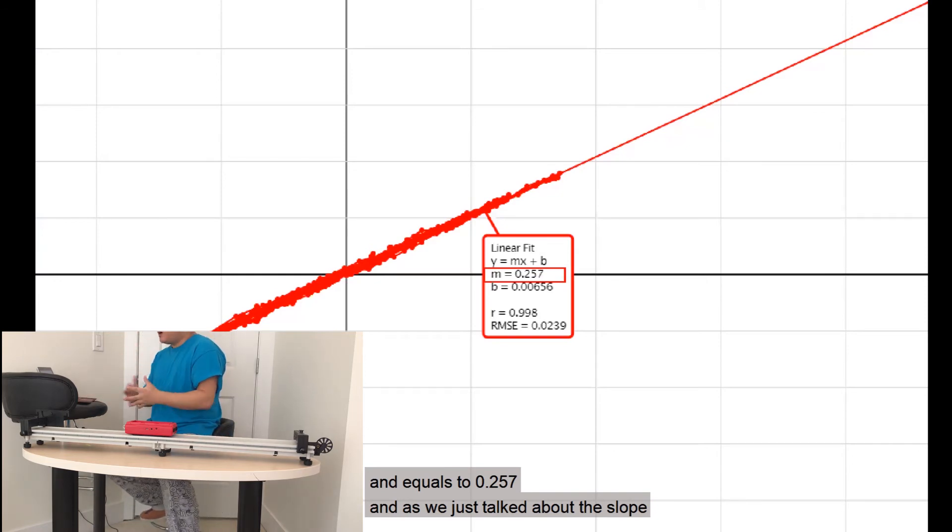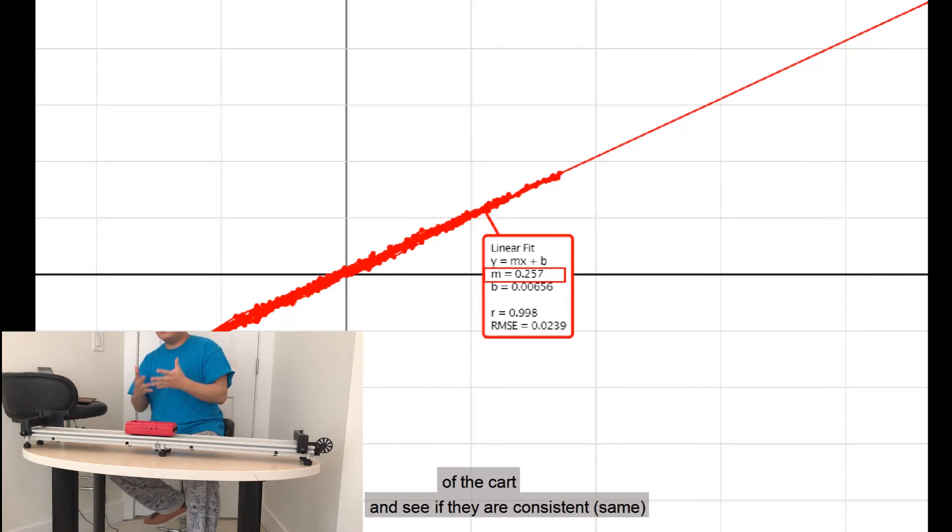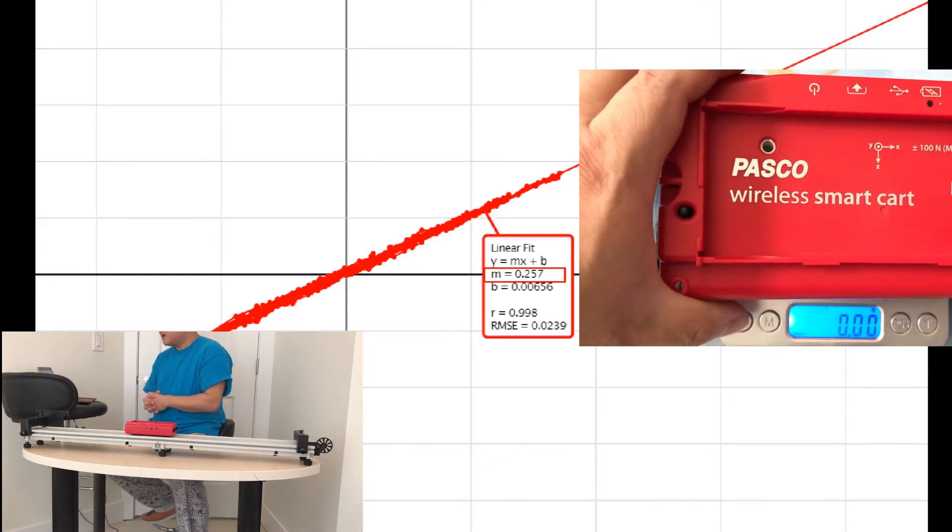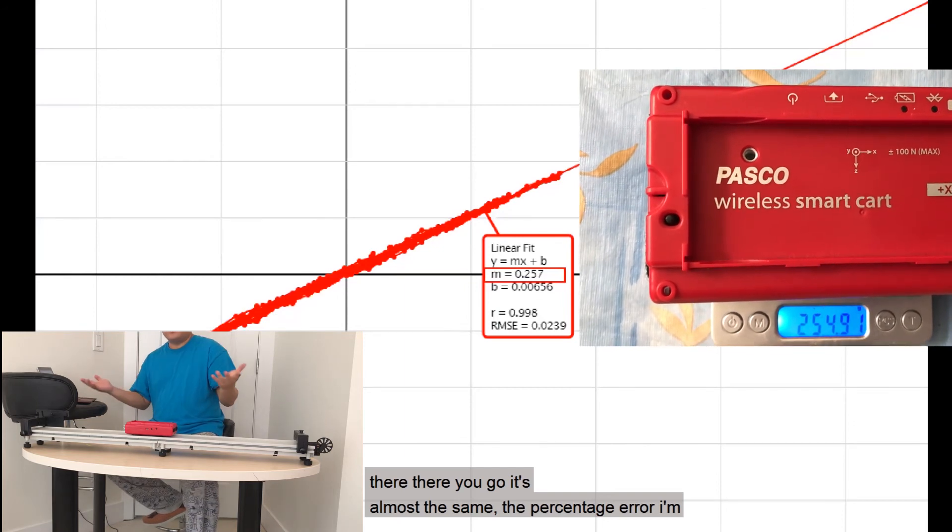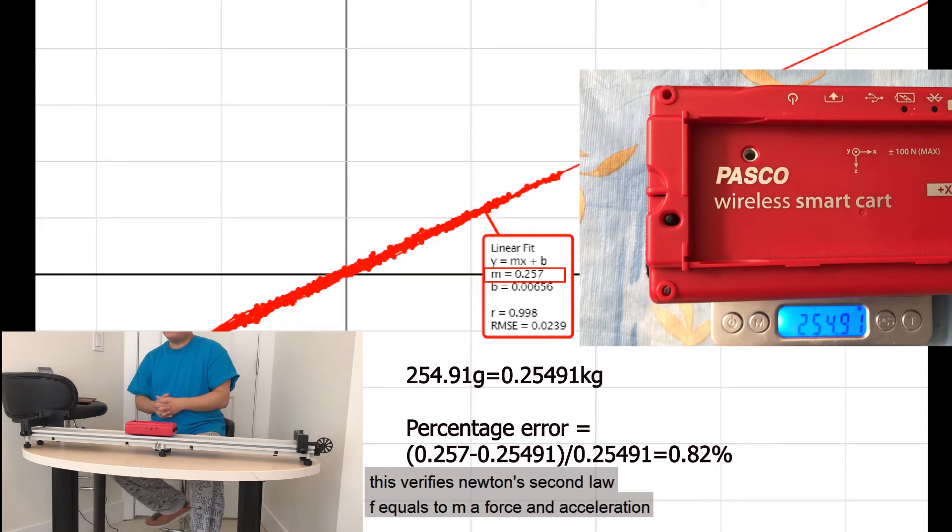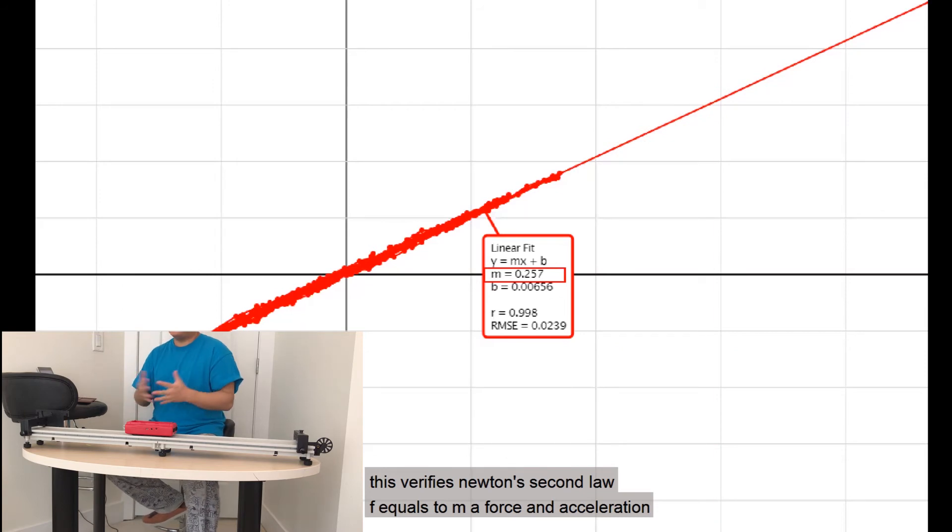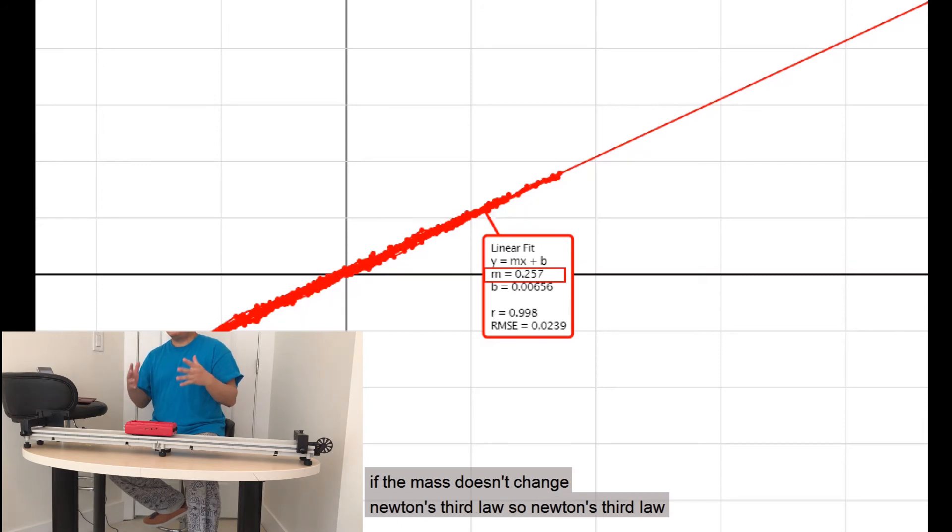And as we just talked about, the slope of this line should be equal to the mass of the card. Now, let's measure the mass of the card and see if they are consistent. There you go. It's almost the same. The percentage error, I'm sure, would be smaller than 1%. So again, this verifies Newton's second law. F equals to MA. Force and acceleration are proportional to each other. They have a linear relation if the mass doesn't change.